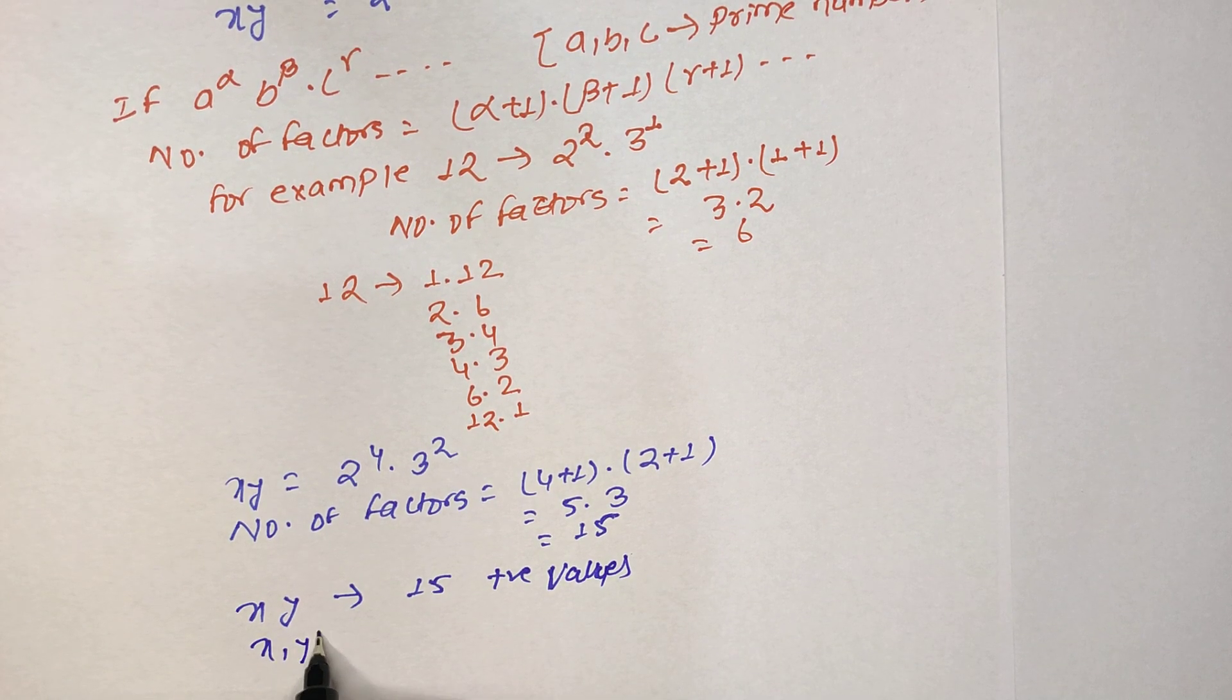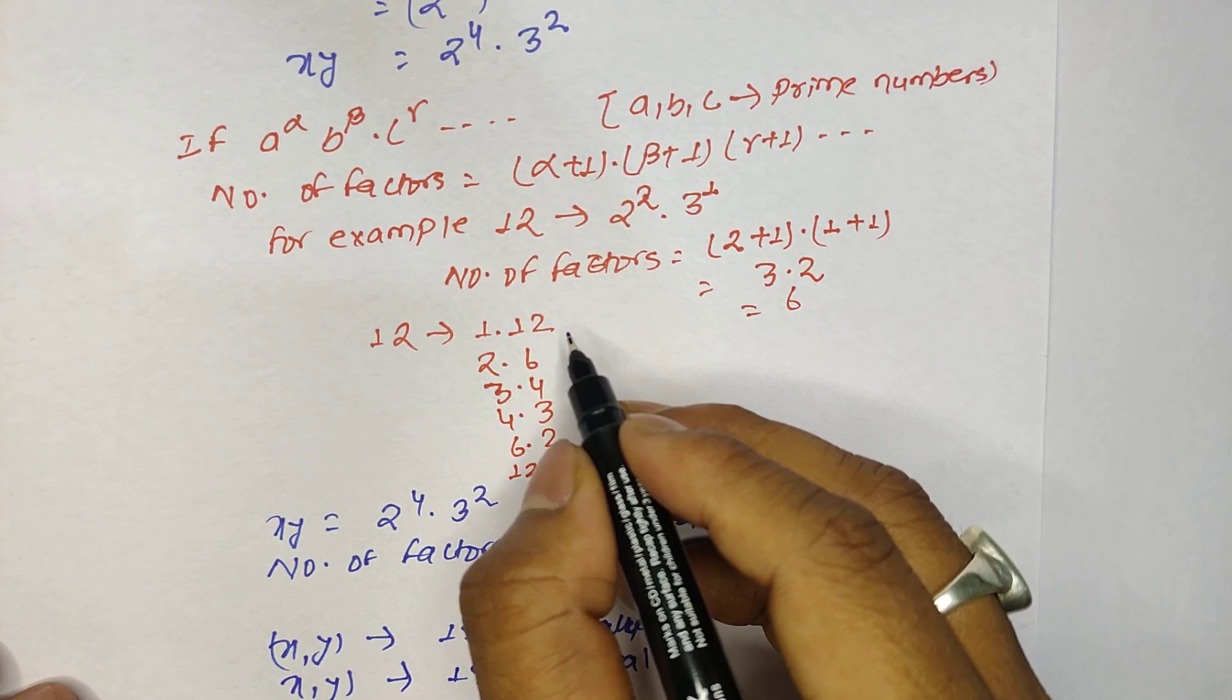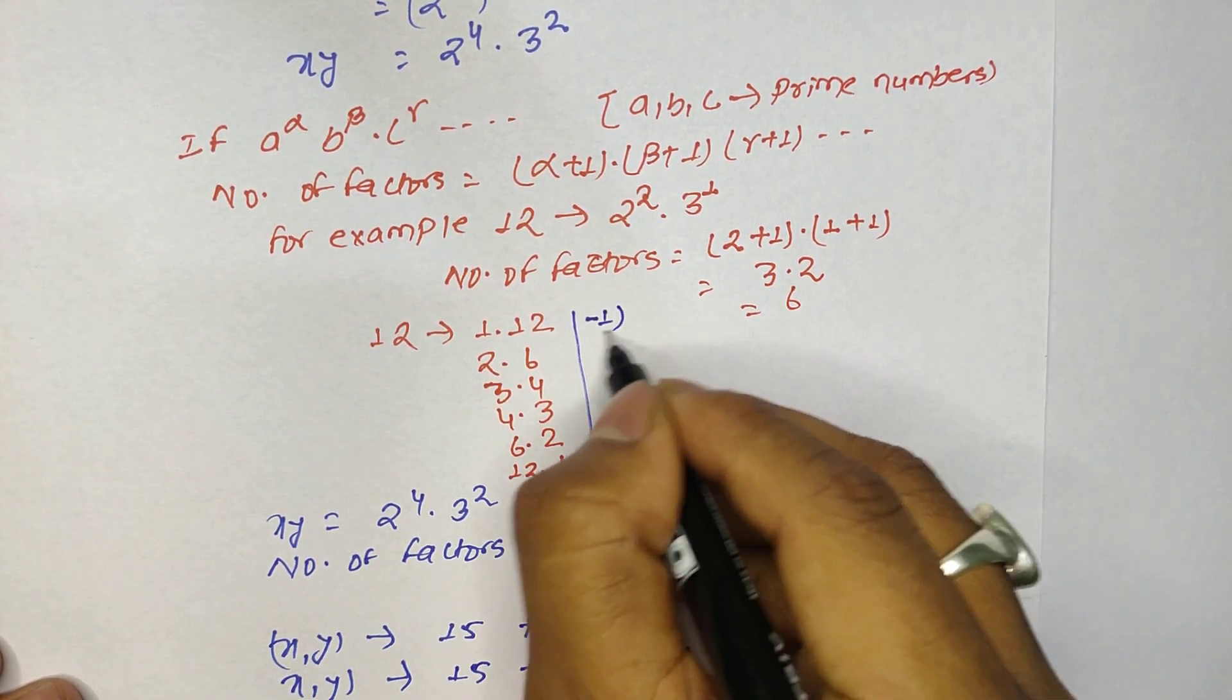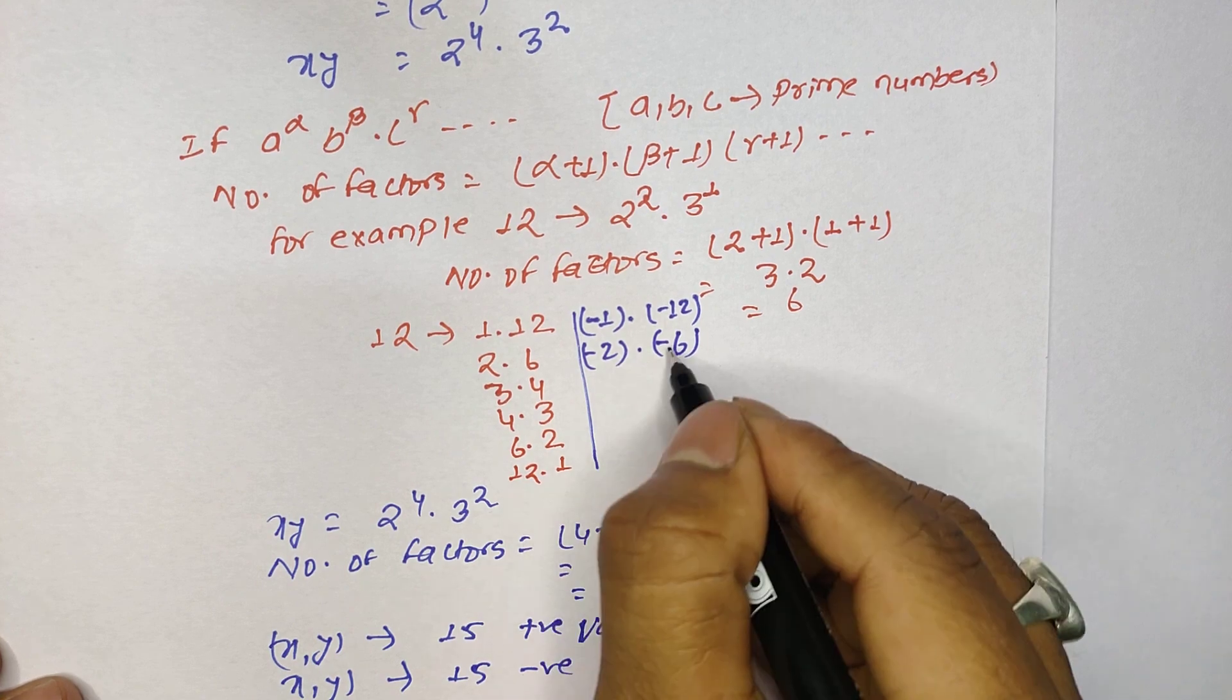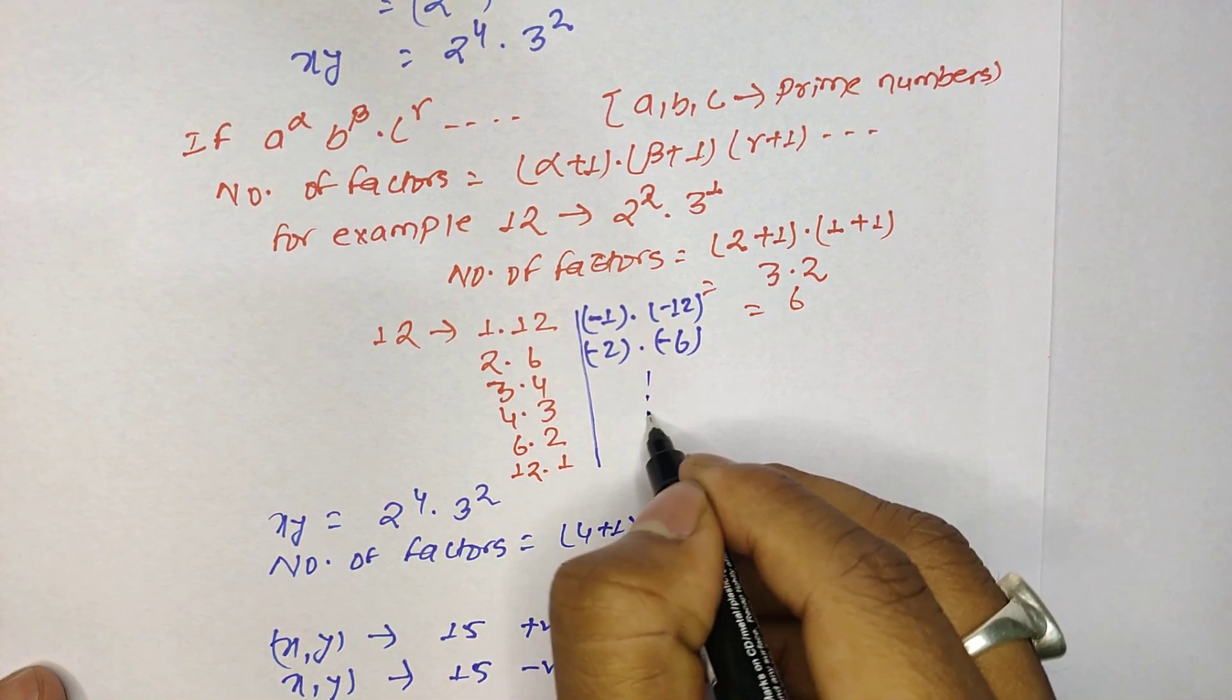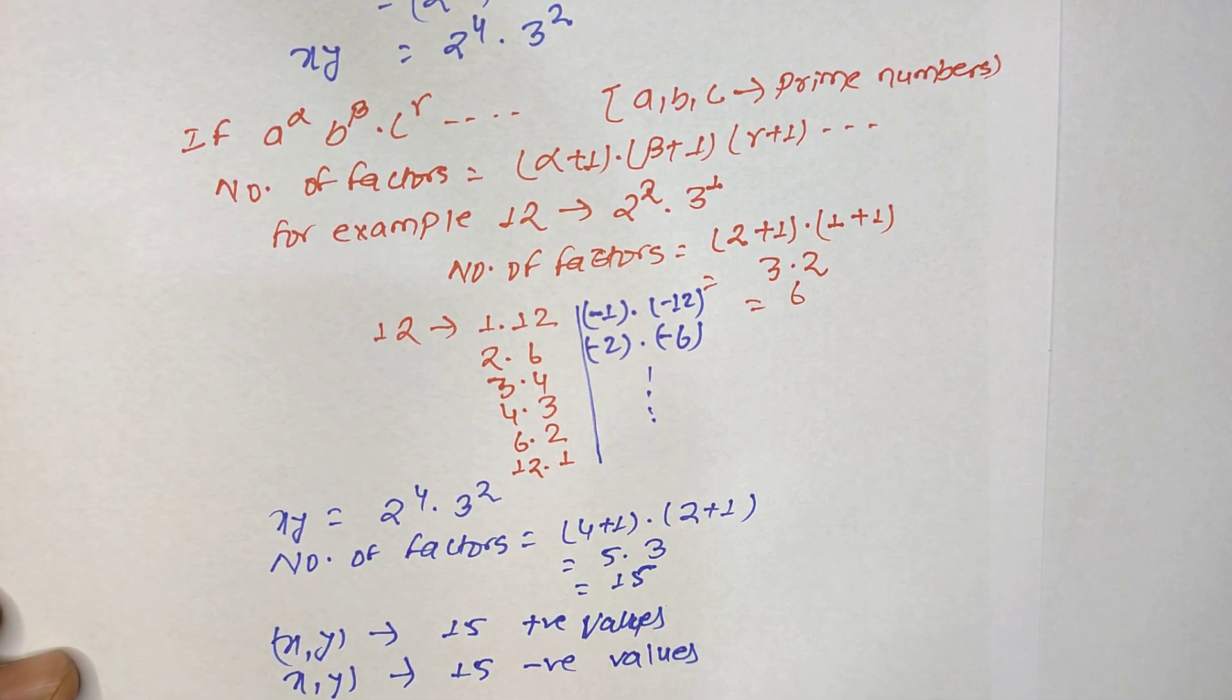So it means that xy can take 15 positive values. As well as xy can also take 15 negative values. If you look at 12, then you can see that 12 can be also minus 1 times minus 12, similarly minus 2 times minus 6. Minus minus makes it plus, and it goes on. It means that the number of positive values it can take, it can also take the same number of negative values.